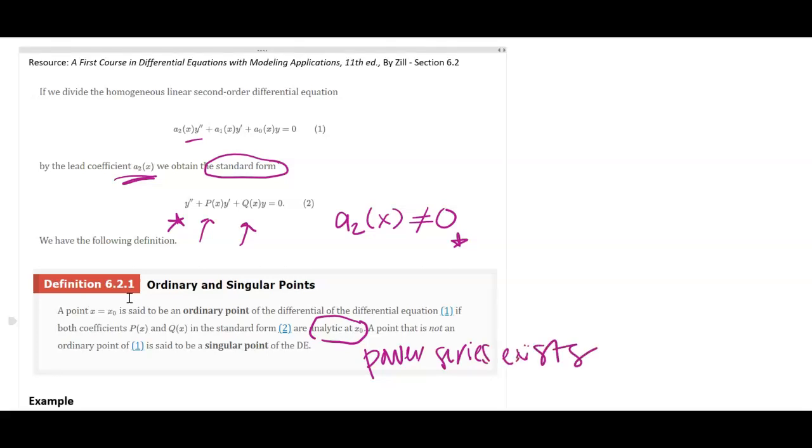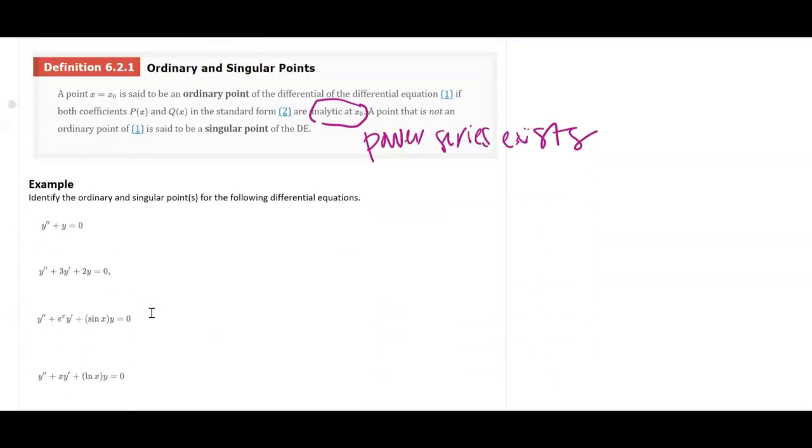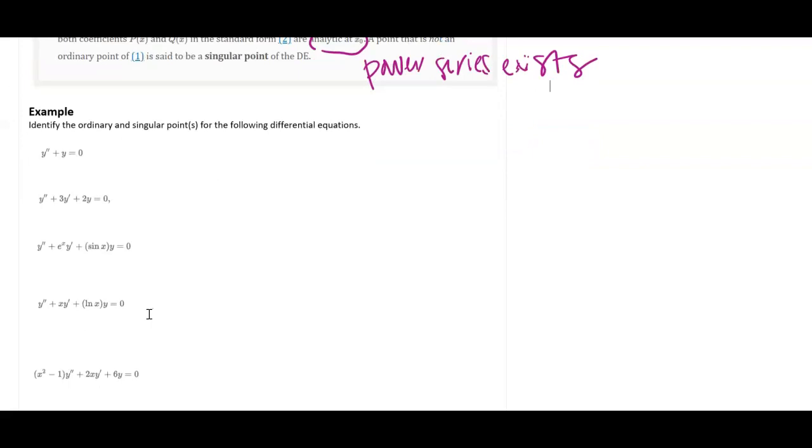If that is not the case, then we call it a singular point. So let's look at some examples. These first three examples right here, all points are ordinary points.